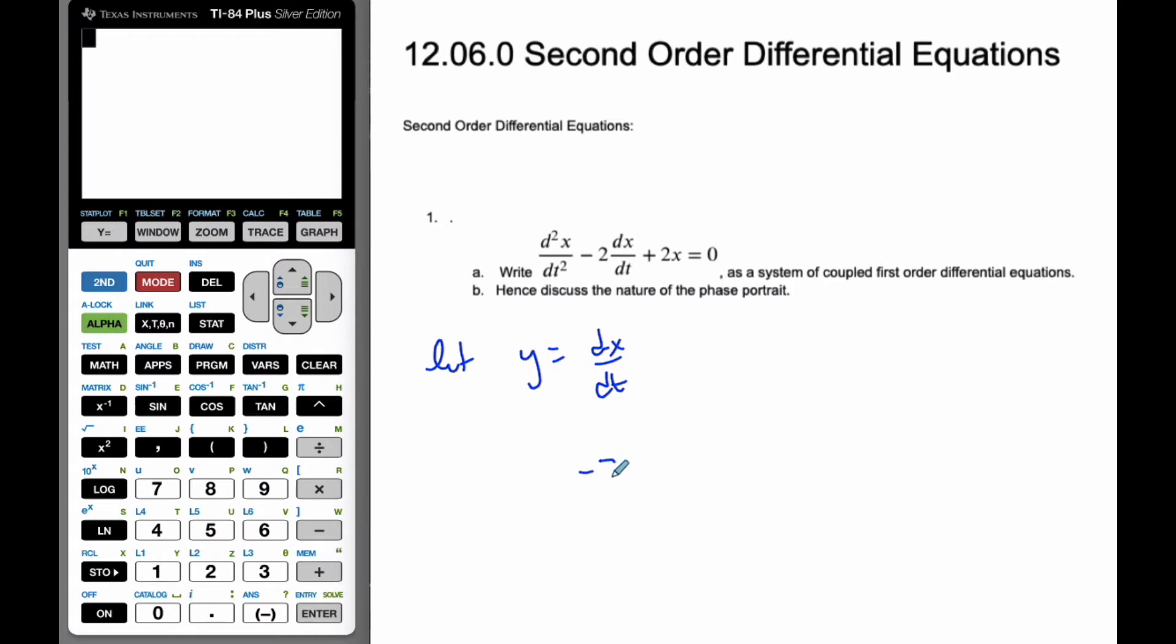So I know that it's minus 2y plus 2x equals 0. But this here, then, the second derivative is the derivative of dx/dt, which is going to be the derivative of y. And so this is going to be dy/dt.